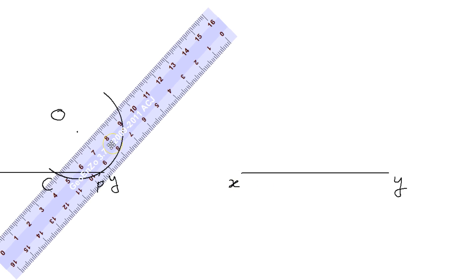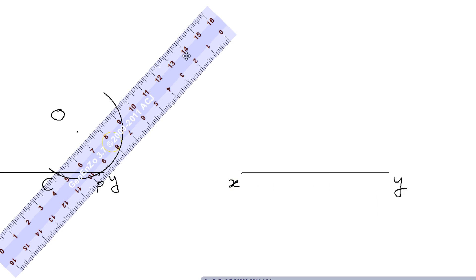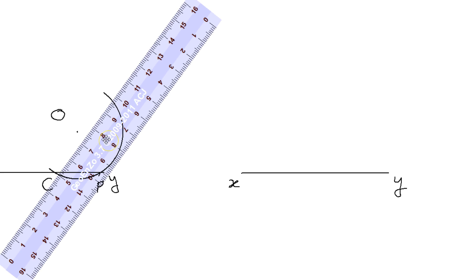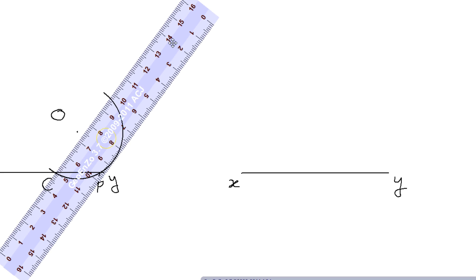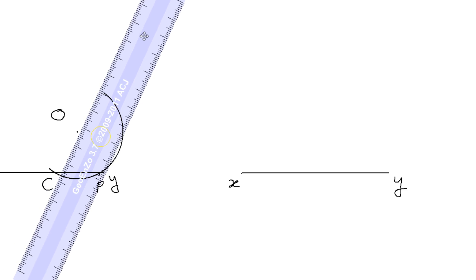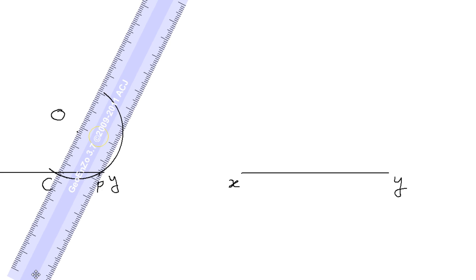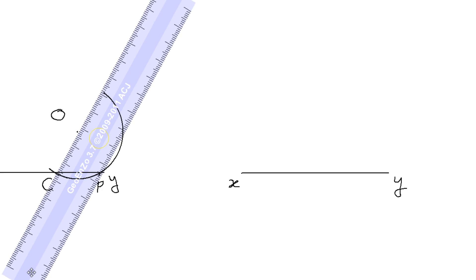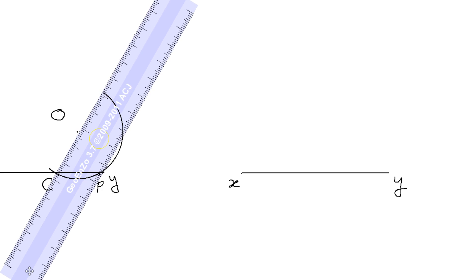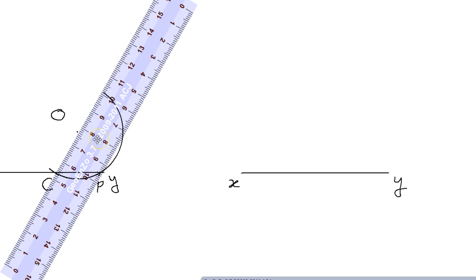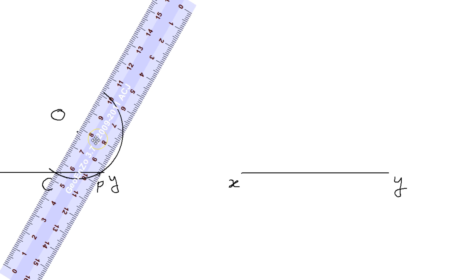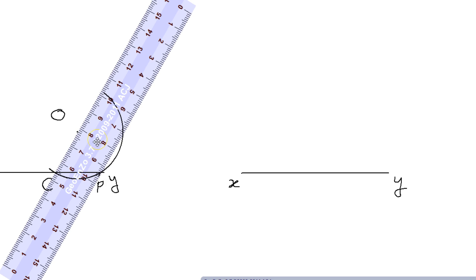This was your original point O. Now connect C and O — take the scale, connect C to O and extend it. It will somewhere cut your original semicircle. Give that point a name — say PQ. Now adjust it with these two points; that is very important. Almost adjusted — now join the two points C and O and extend it to see where it cuts the arc.